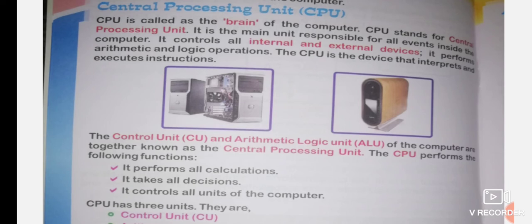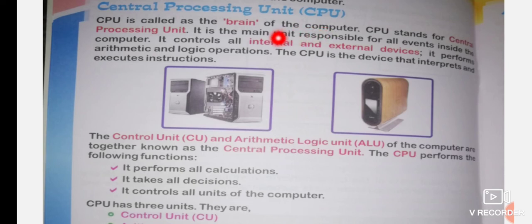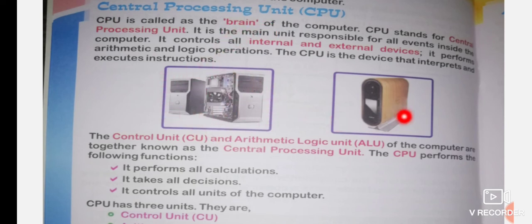The next topic is CPU, which stands for Central Processing Unit. CPU is called the brain of your computer. Like a human brain, it is going to think. It cannot think on its own, but we give it instructions to function, just like a human brain. Inside the CPU, there are many units.